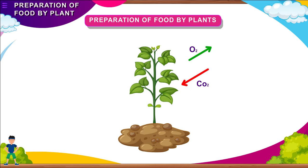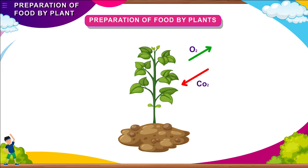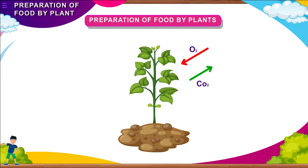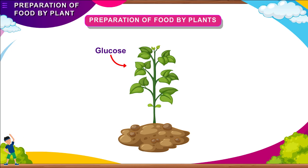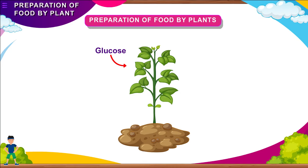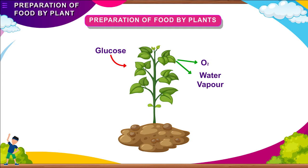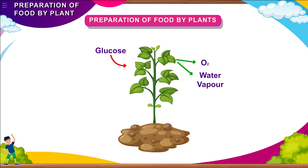Leaves take in carbon dioxide and give out oxygen during photosynthesis. At night, leaves take in oxygen and give out carbon dioxide. The food prepared by the leaves is a kind of sugar called glucose. Plants use glucose to produce energy by burning it in their cells. This energy helps the plants to grow. During photosynthesis, oxygen and a little amount of water vapor is also produced.